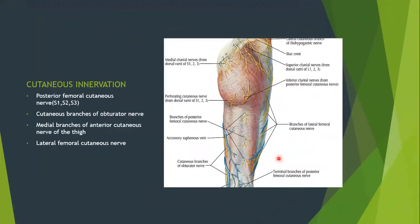The cutaneous innervation of the posterior aspect of the thigh is by these nerves: the posterior femoral cutaneous nerve, root values S1, S2, S3; cutaneous branches of the obturator nerve; the medial branches of the anterior cutaneous nerve of the thigh; and the lateral femoral cutaneous nerve, root values L2 and L3. The anterior cutaneous nerve is a cutaneous branch from the femoral nerve, whose root values are L2, L3, and L4.